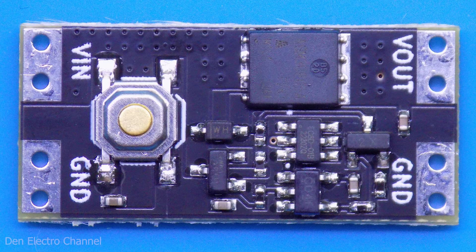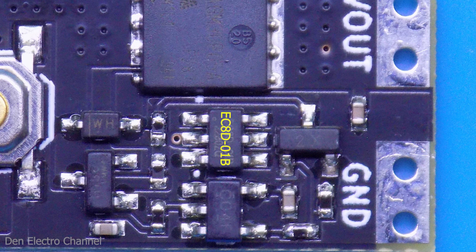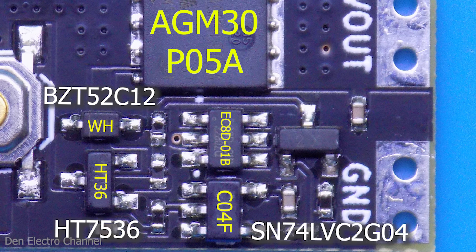There are more parts on the high voltage module. Here is the same control chip and transistor. In addition, there is a 12-volt Zener diode, a 3.6-volt voltage regulator, a dual signal inverter and a bipolar transistor.